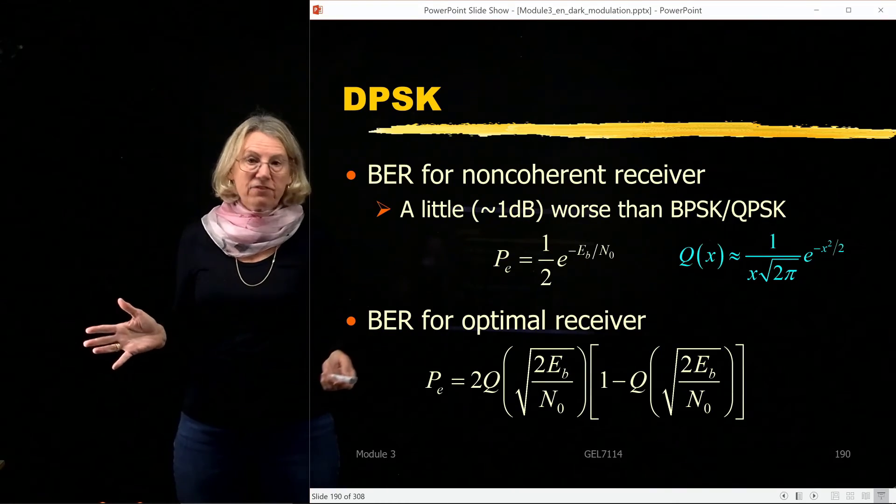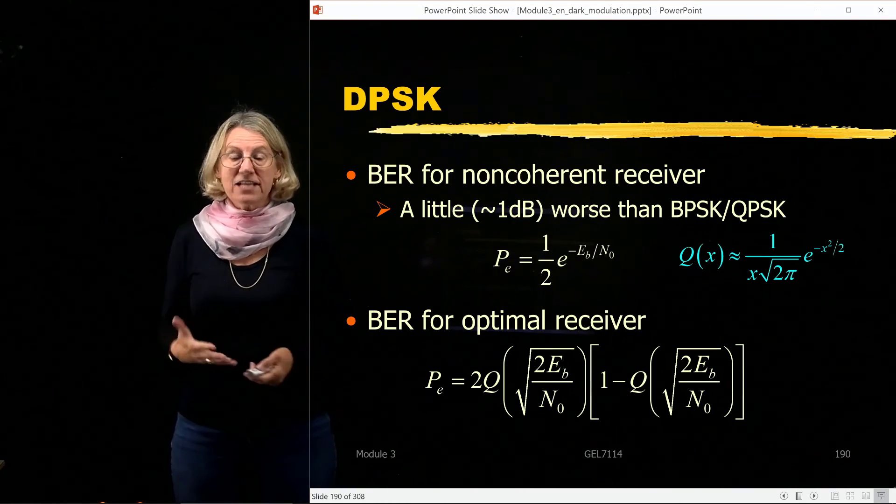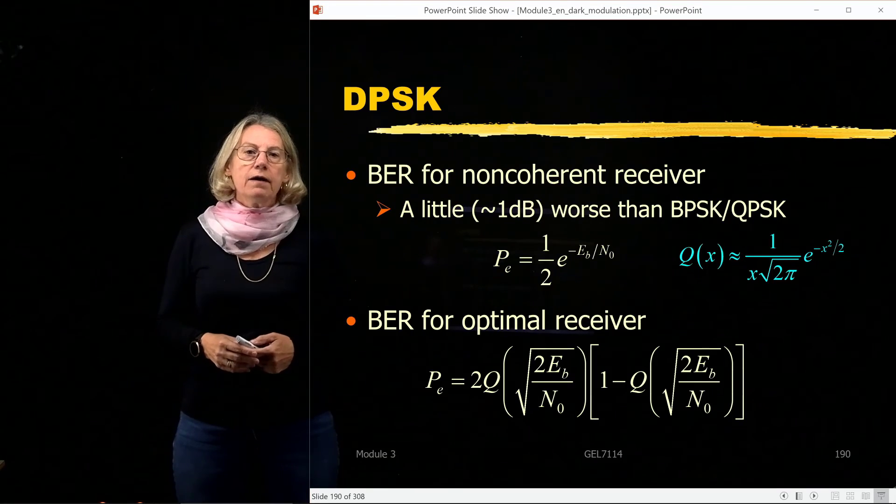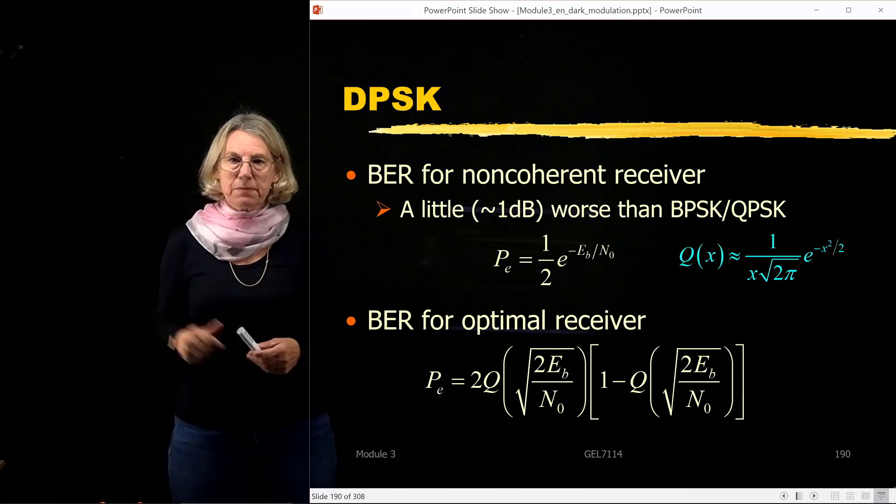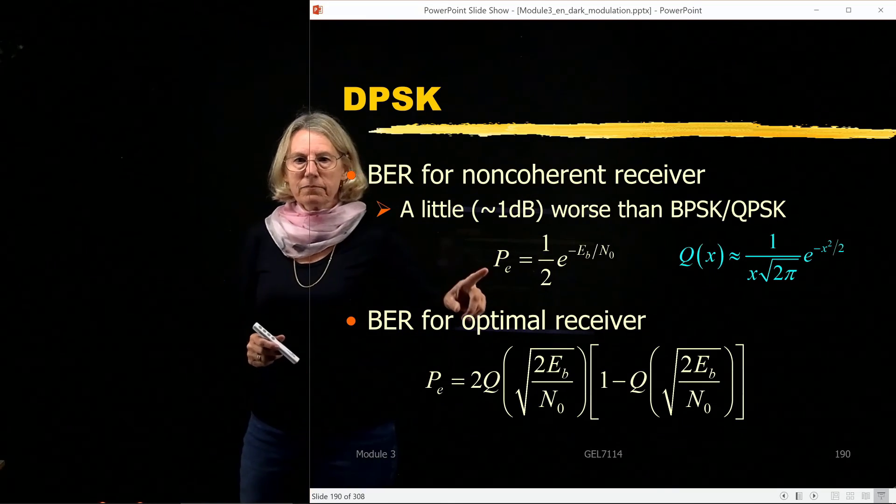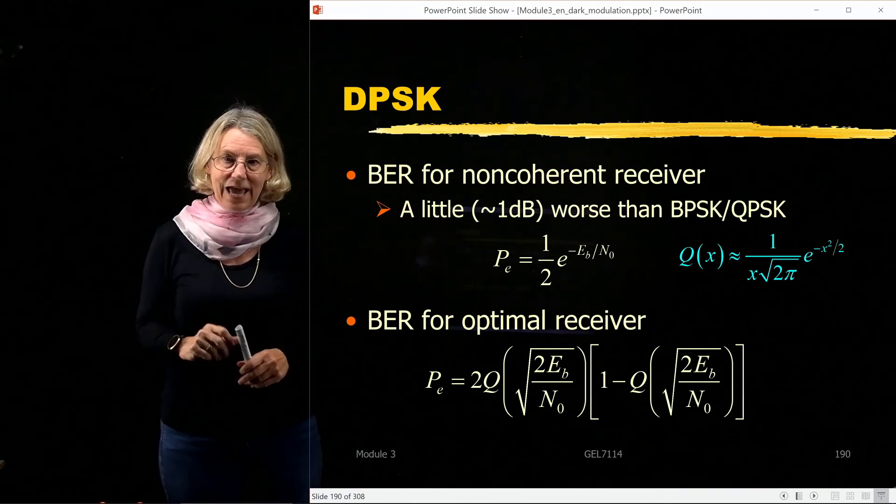So I won't go through the math for the Gaussian, non-Gaussian case, although I think it is in the book, but the bit error rate comes out to have a very simple form, deceptively simple form.